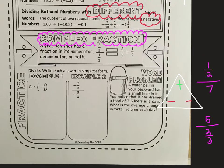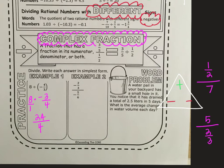For example one: if we have eight divided by negative four thirds, that's the same as eight times negative three fourths. Remember, you can always put one under any number to make it a fraction. Then we multiply straight across: eight times three is 24, one times four is four. One of those was negative, so we know our answer is going to be negative. And negative 24 divided by four is negative six.